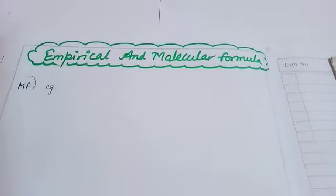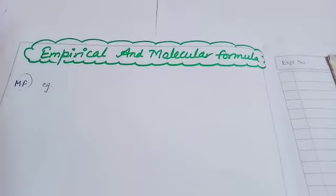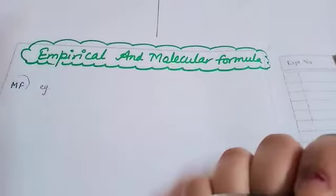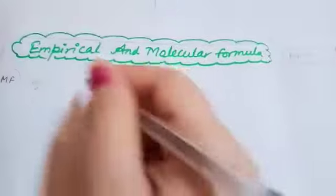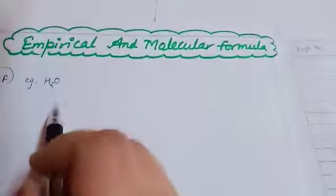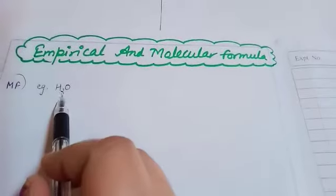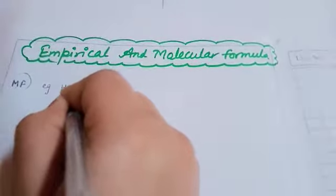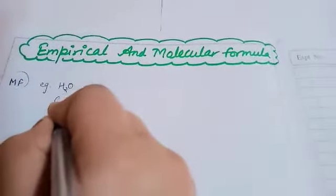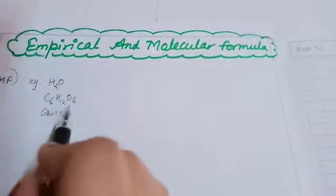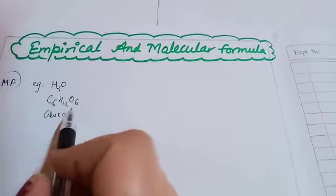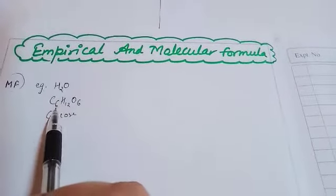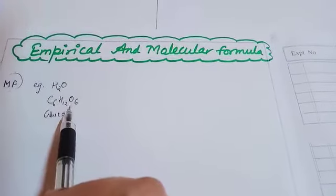Molecular formula tells us how many various elements are present in a particular compound. For example, the formula of water is H₂O — this is a molecular formula because the number of hydrogen atoms is 2 and oxygen is 1. Another example is glucose: C₆H₁₂O₆. This is a molecular formula of glucose, not a structural formula, because it only gives us the idea of how many elements are present — 6 carbon, 12 hydrogen, and 6 oxygen.